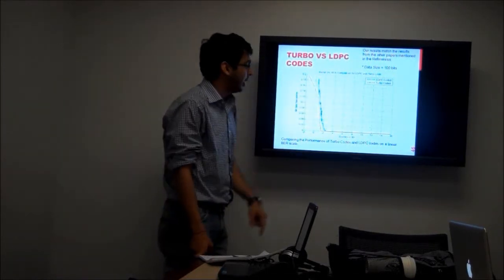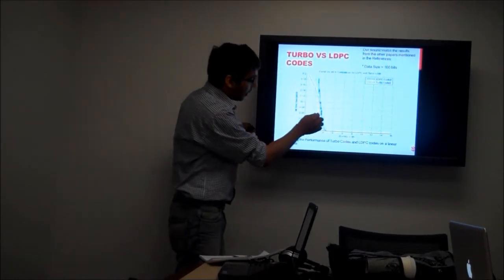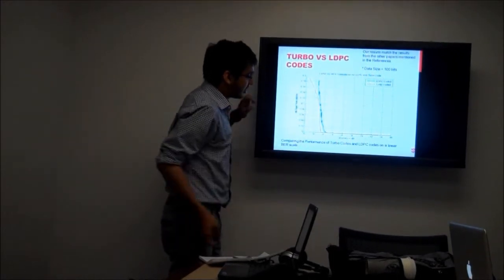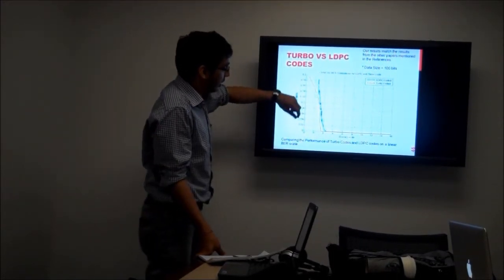The line right here represents the turbo-coded data. So it turns out that the difference, the coding gain between these two curves that are drawn is not of that great a value.